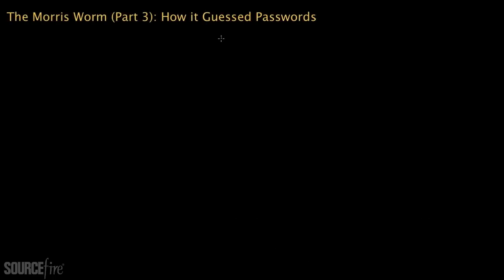Whenever the Morris worm managed to gain access to a system, it would try, among other things, to determine the passwords of the users on that system. And by figuring out the passwords, the worm could effectively propagate further. The approach that the Morris worm took is actually surprisingly simple.